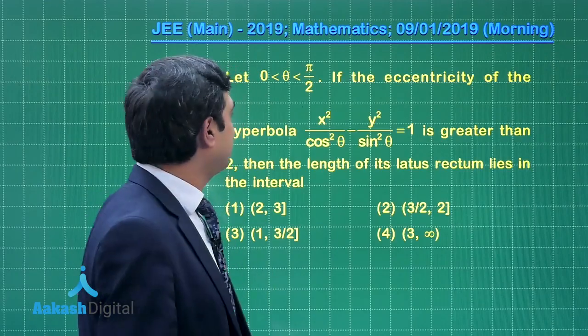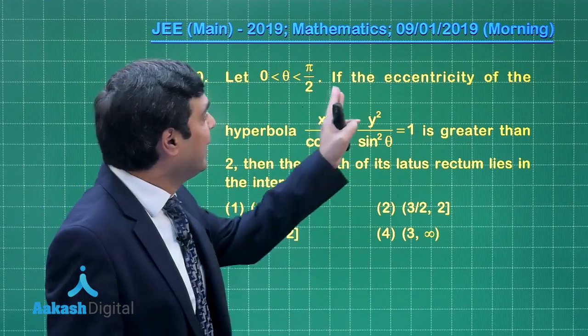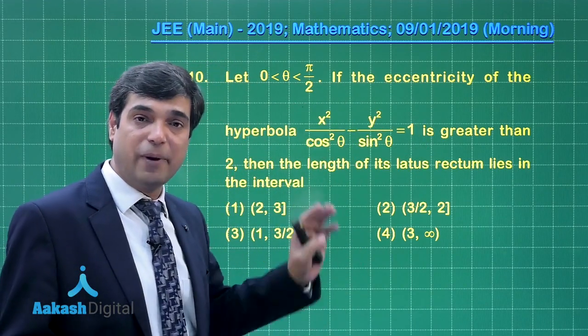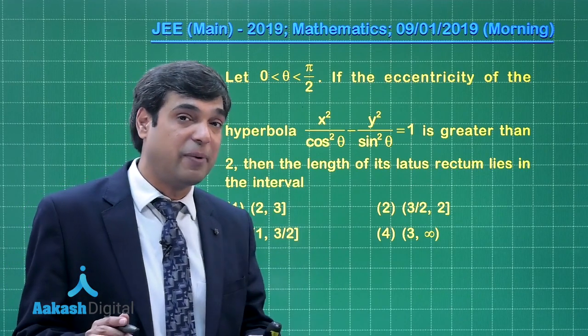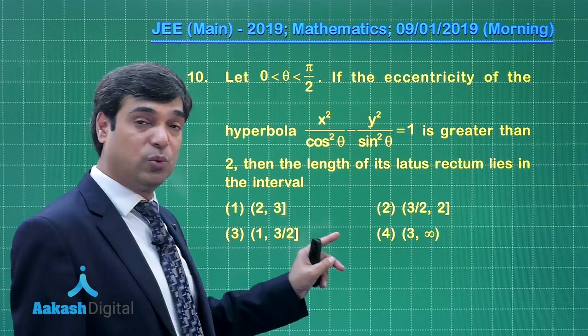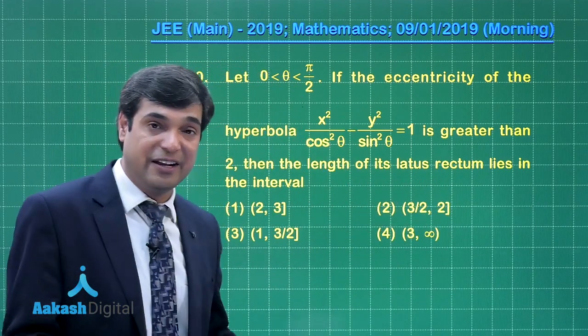Moving on to the next question, question number 10. Let theta be in the interval 0 to π/2. If the eccentricity of the hyperbola x²/cos²θ - y²/sin²θ = 1 is greater than 2, then the length of latus rectum lies in the interval.